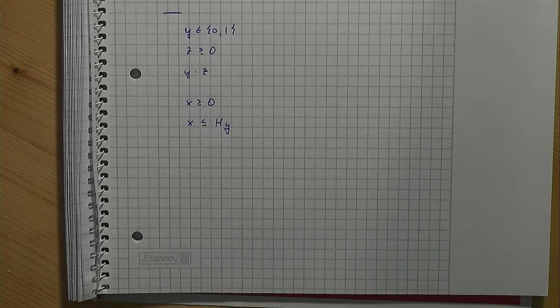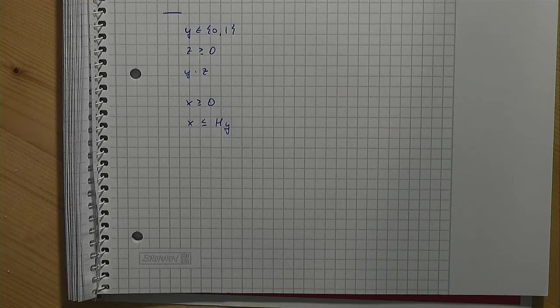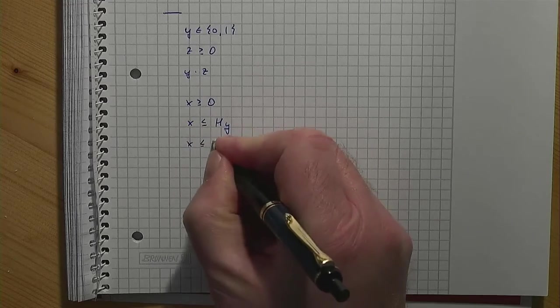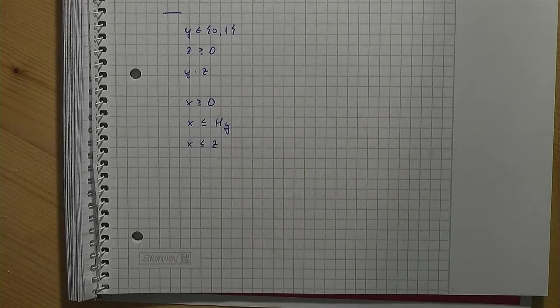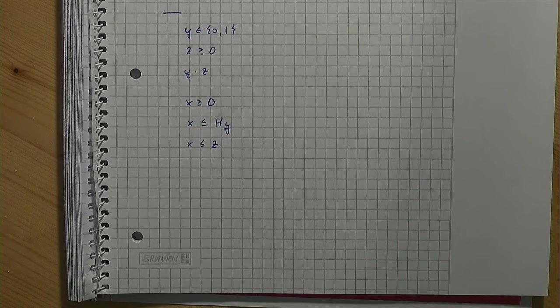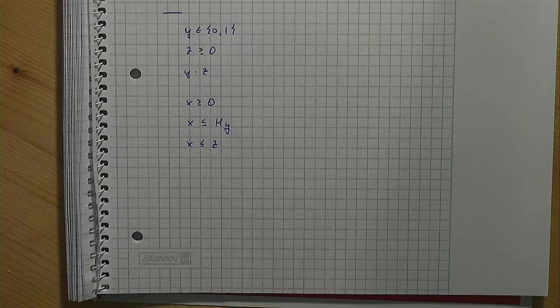Furthermore, x cannot be greater than z, which is easy to formulate. The trick is to add another constraint that makes sure that x cannot be smaller than z if y equals 1.